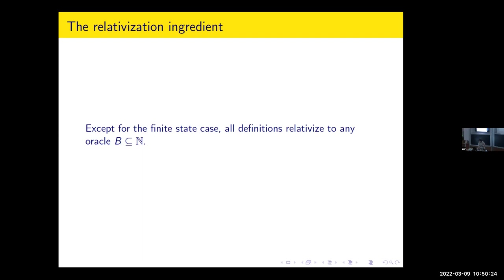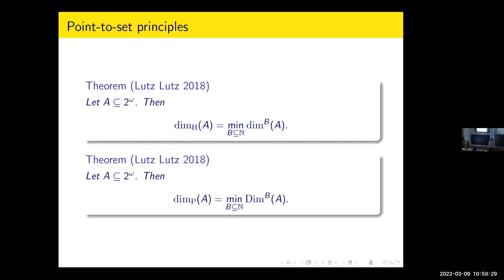Neil and Jack Lutz in 2018 proved that the Hausdorff dimension of a set in Euclidean space is the effective dimension relative to some oracle B. Actually there is a precise oracle B for which you get back classical dimension when you do the effectivization. The same result holds for packing dimension — a similar result as well.